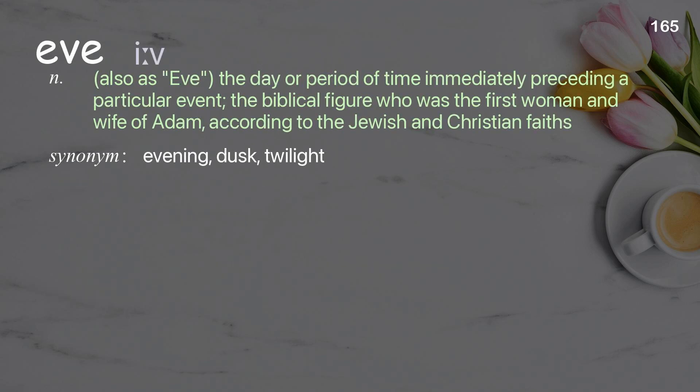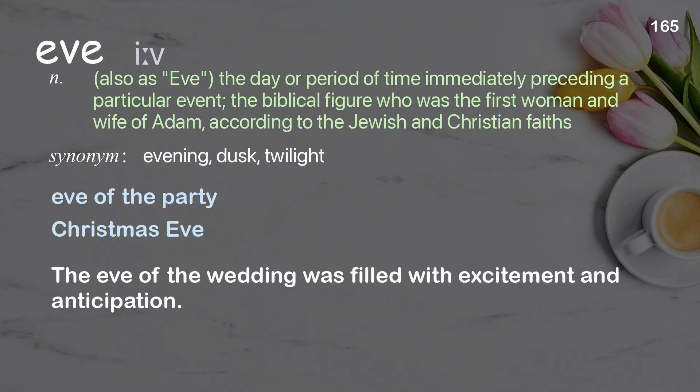Eve: the day or period of time immediately preceding a particular event; the biblical figure who was the first woman and wife of Adam, according to the Jewish and Christian faiths. Examples: eve of the party, Christmas Eve. The eve of the wedding was filled with excitement and anticipation.